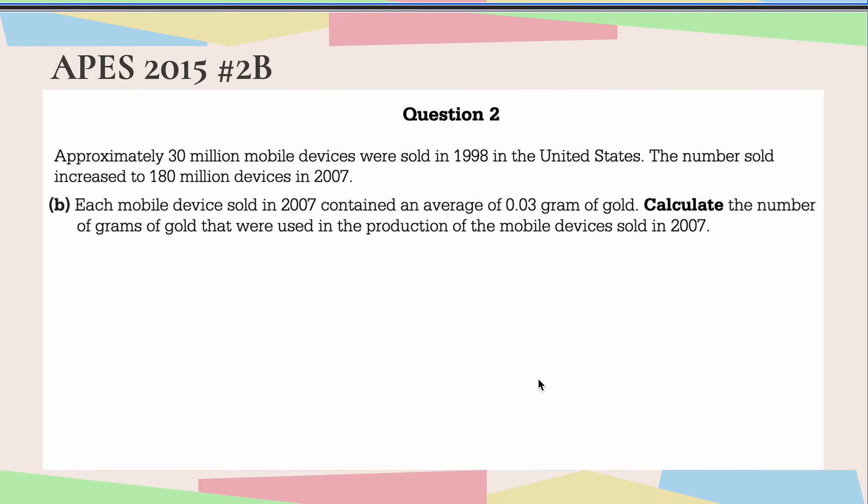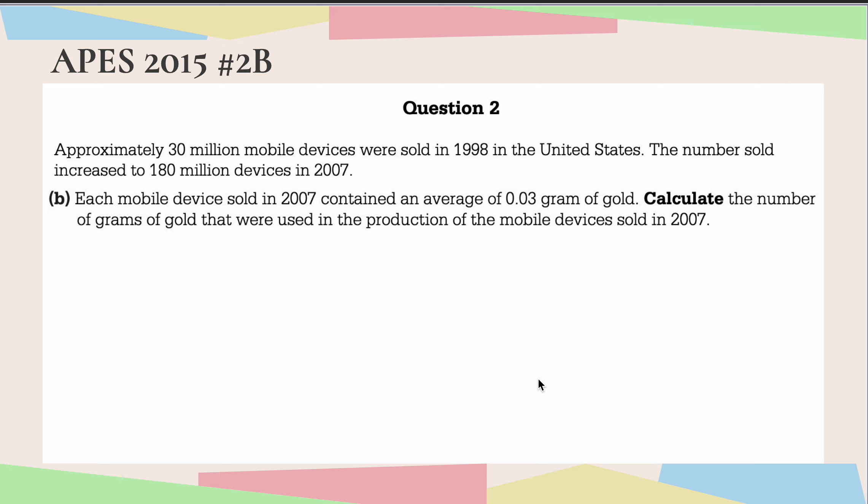Moving on to part B. Each mobile device sold in 2007 contained an average of 0.03 grams of gold. Calculate the number of grams of gold that were used in the production of mobile devices sold in 2007. So how many mobile devices were sold in 2007?